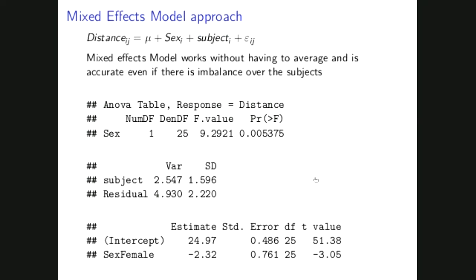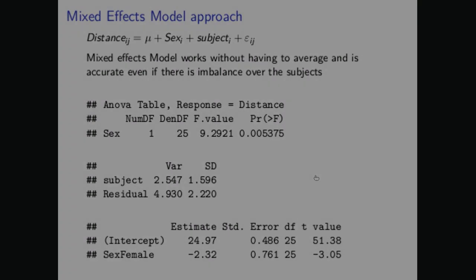So averaging is a good approach, but still not the best, because you lose data. Additionally, you can only do the averaging if your covariates are at the between-subject level. You couldn't do this with a within-subject covariate like age.